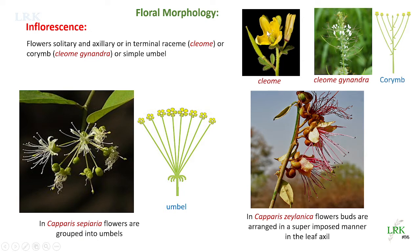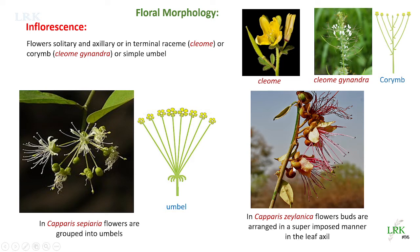In Capparis sepiaria, flowers are grouped into umbels — all flowers arising from the same point, resembling a flower bouquet. In Capparis zeylanica, all the flower buds are arranged in a superimposed manner (one above the other), developing from the leaf axil. This superimposed axillary arrangement is characteristic of Capparis zeylanica.